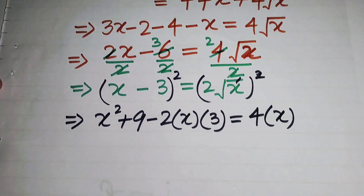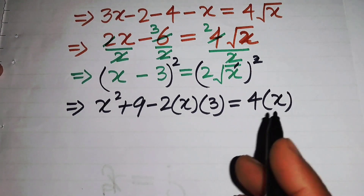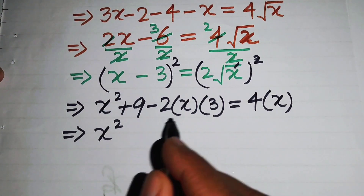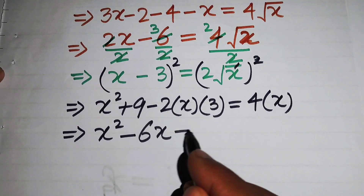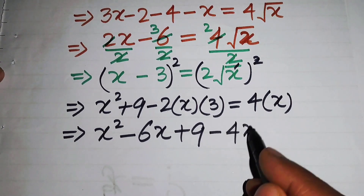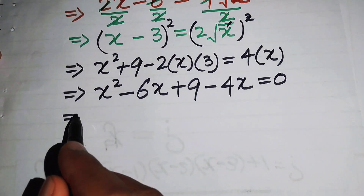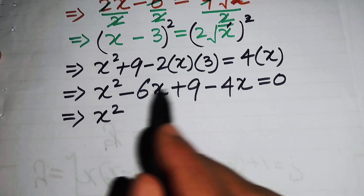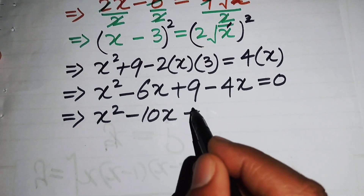We rearrange the terms, moving 4x from the right-hand side to the left-hand side. We obtain x squared minus 6x plus 9 minus 4x equals 0. Combining like terms, minus 6x minus 4x equals minus 10x, so we have x squared minus 10x plus 9 equals 0.